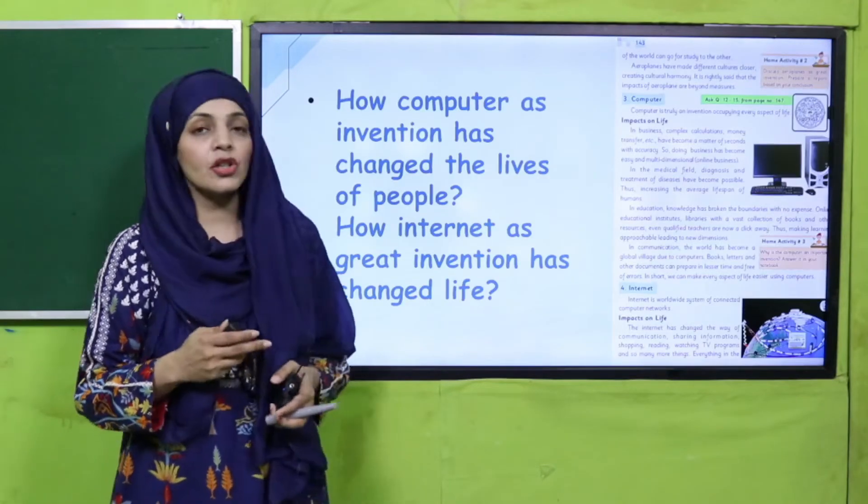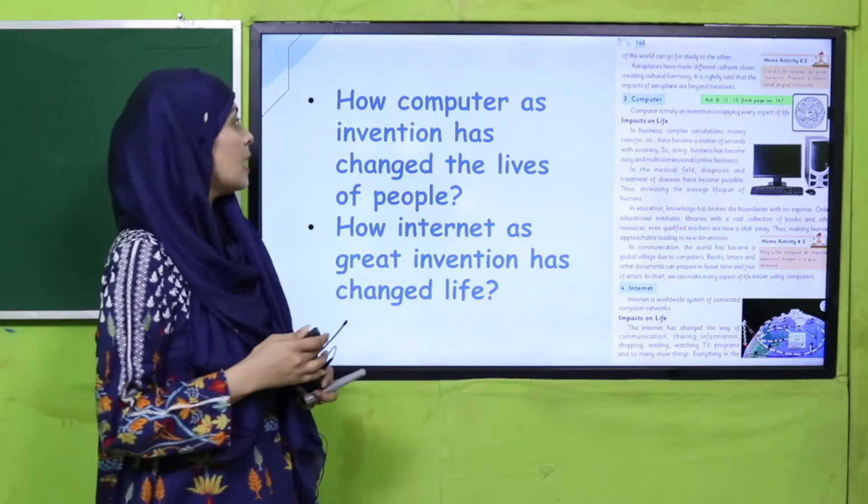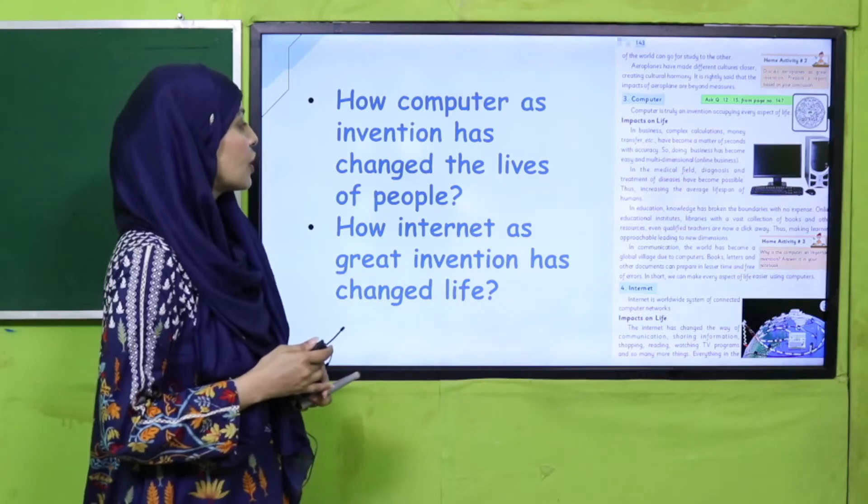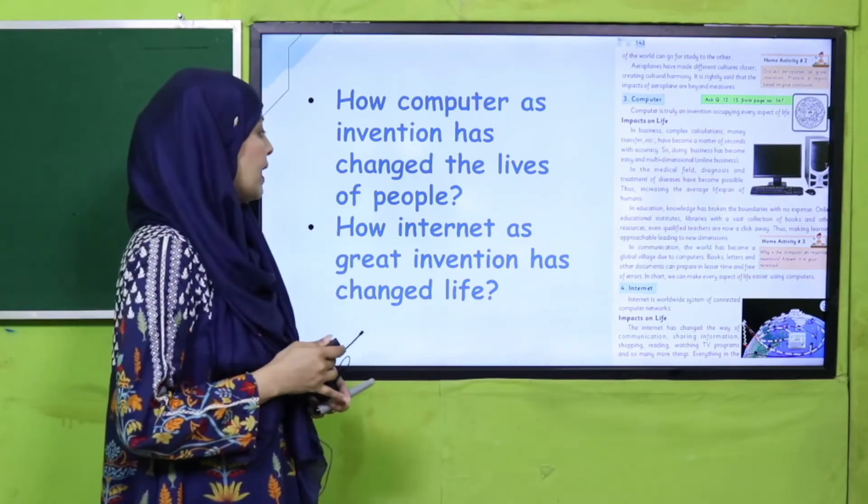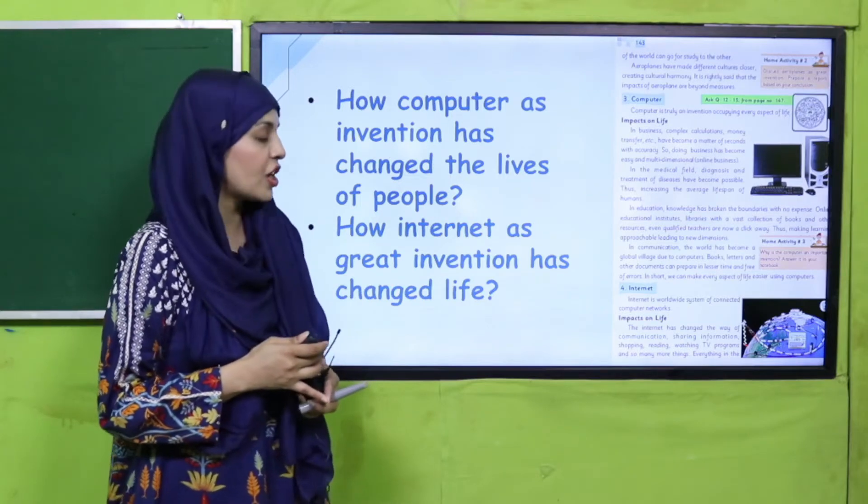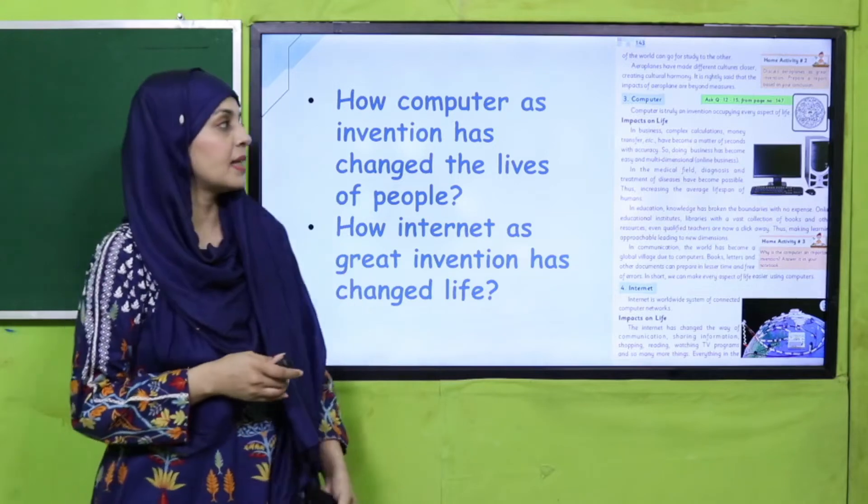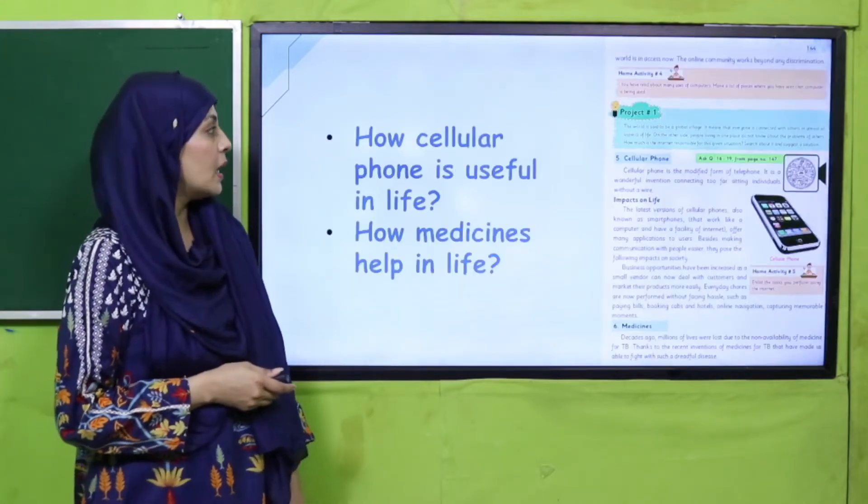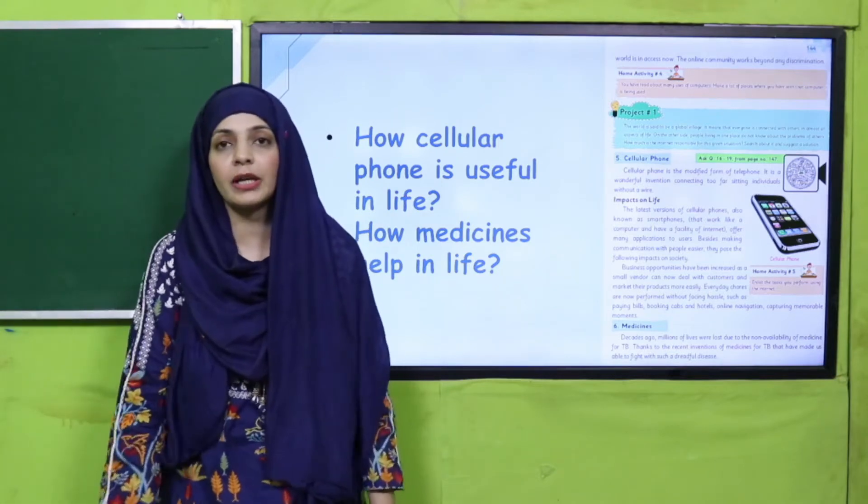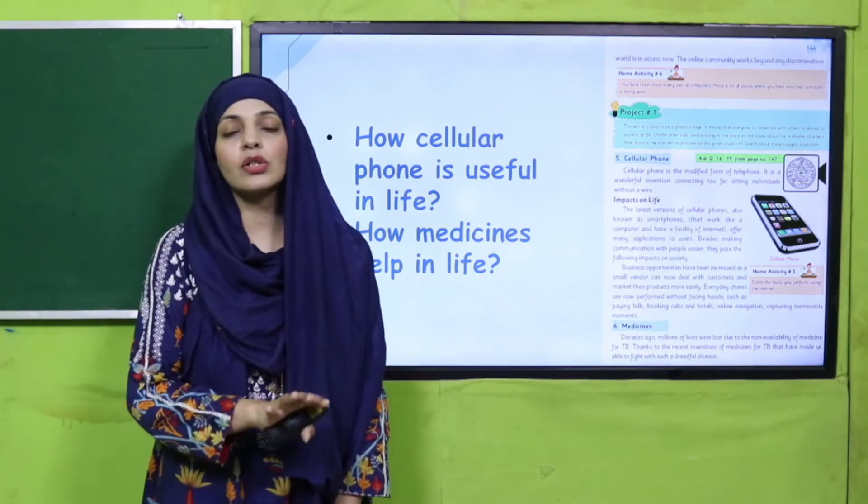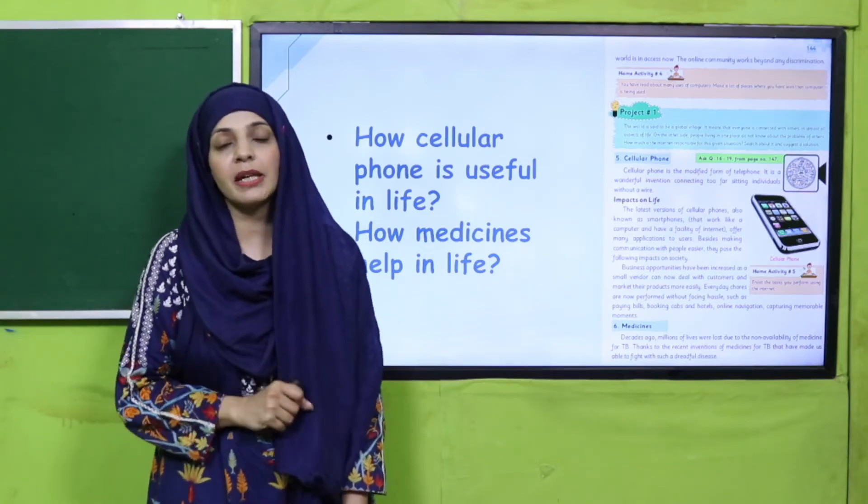So my dear students, next invention that we discussed was a computer and internet. So quickly tell me how computer as invention has changed the lives of people? Very good. And how internet has great invention and changed the life? Okay excellent. So my dear students, next what is cellular - how cellular phone is useful in life and how medicine is useful in life. Kis tarah se medicine aur cellular phone so hai yeh humari life ke liye bohot zyada important hai aur inka kya impact hai life pe? Very good.